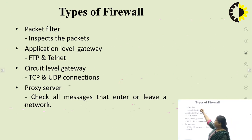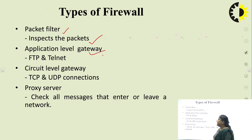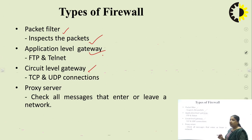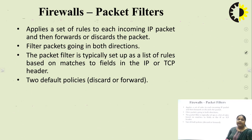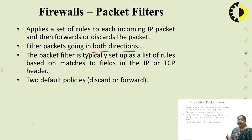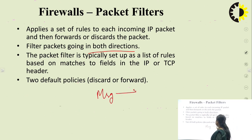The types of firewall include: packet filter, which inspects the packets of data transferred through the firewall from the internet to the LAN network; application level gateway, which handles FTP and Telnet; circuit level gateway, which works through TCP and UDP connections; and proxy server, which checks all messages that enter or leave the network. Packet filters apply a set of rules to each incoming IP packet and then forward or discard the packet, filtering packets going in both directions. They are set up as a list of rules based on matches to fields in the IP or TCP header, with two default policies: discard or forward.